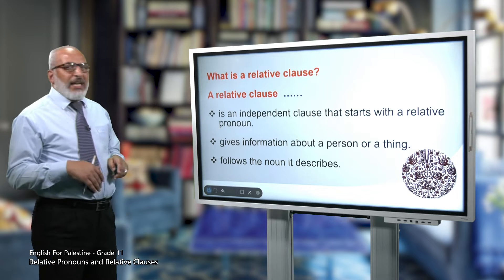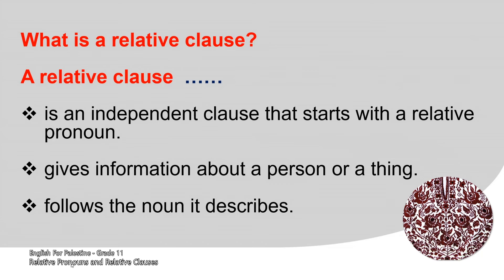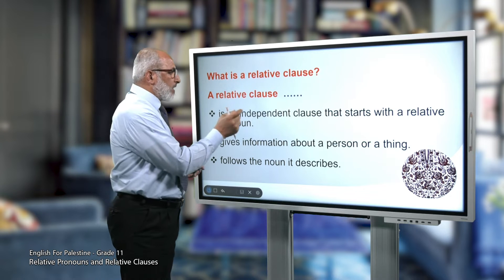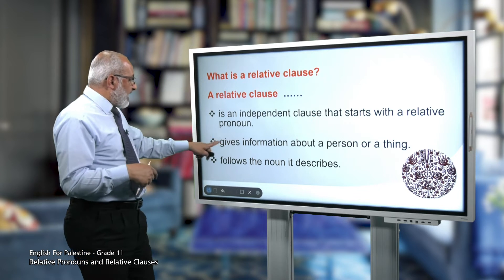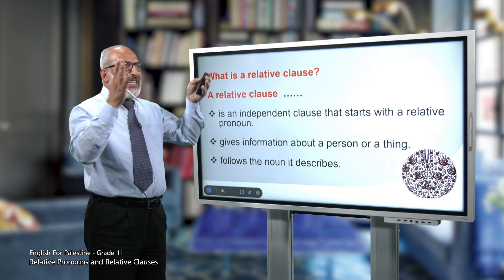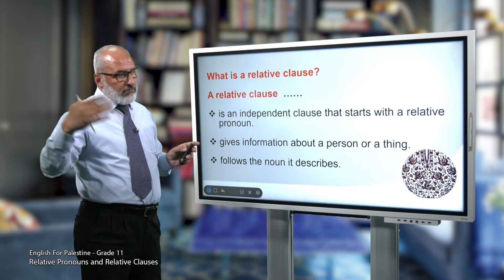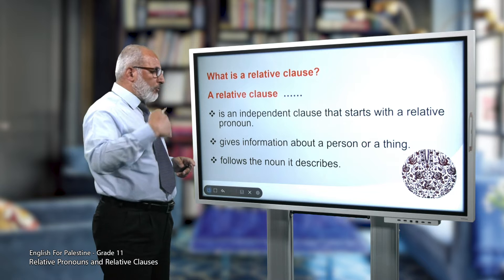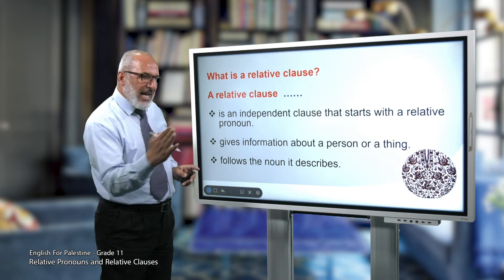Let's now move to relative clauses. What is a relative clause? A relative clause is an independent clause that starts with a relative pronoun — who, which, whose, where, or that. It gives information about a person, a thing, or a place. It follows the noun it describes and comes directly after it. An independent clause means it has a subject and a verb, and optionally an object.